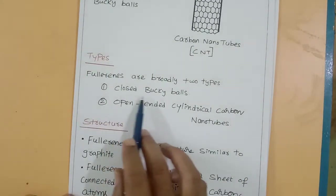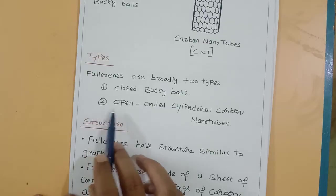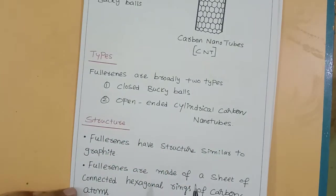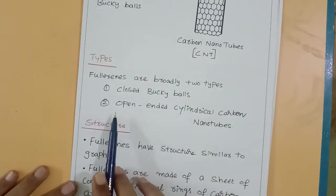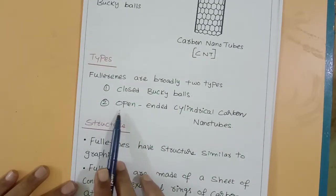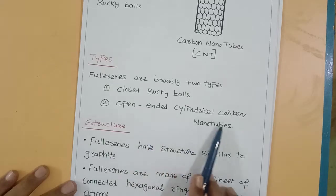Fullerenes are broadly two types: number one, closed Bucky balls, and number two, open-ended cylindrical carbon nanotubes.